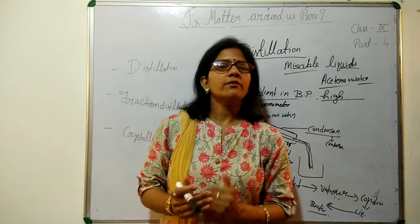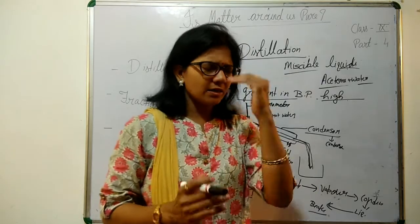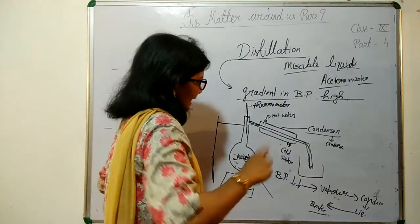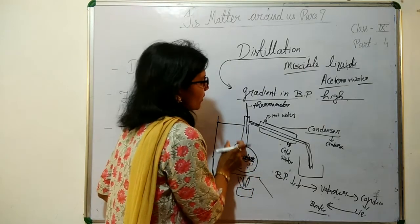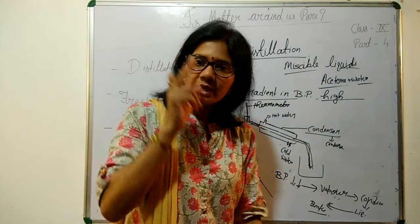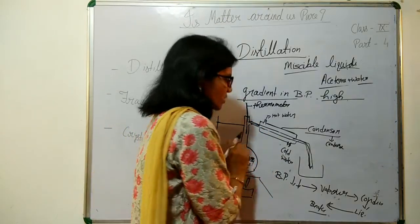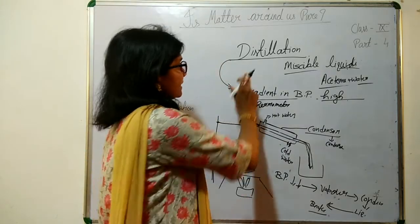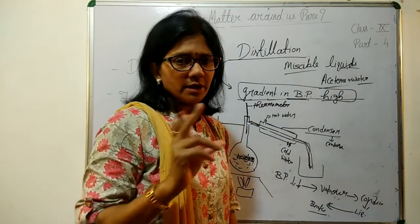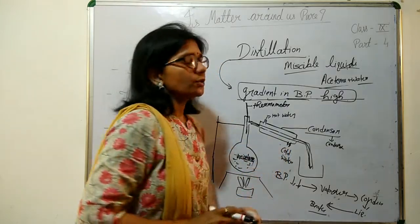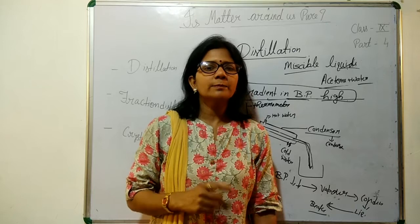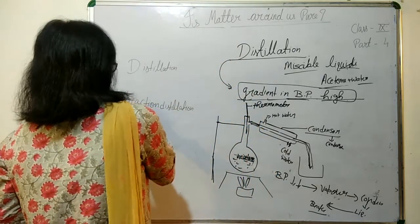So that was about the distillation process, in which we can separate miscible liquids having a boiling point difference of 25 degrees or more. Now let's see what fractional distillation is. Although we increase the temperature and the liquid with low boiling point goes to the condenser, some vaporization of the other liquid also takes place. There is a limitation: we need a great difference in boiling point. But if you have liquids with a very slight difference in boiling point, then we go for fractional distillation.